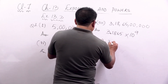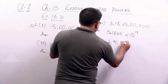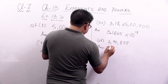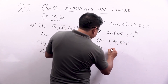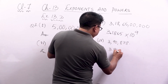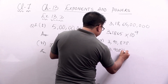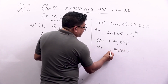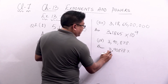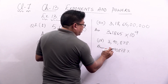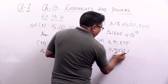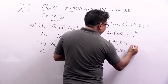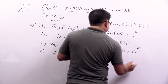Similarly for question 4: 390878. Since I want only one place before the decimal, I write 3 point 90878. After the decimal point count the digits: 9, 0, 8, 7, 8 — that is 5 digits. So the answer is 3.90878 into 10 to the power 5.